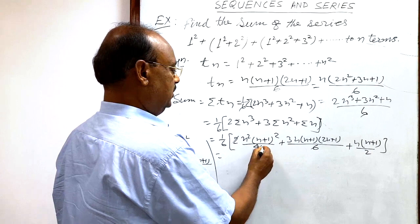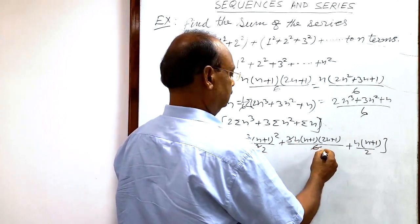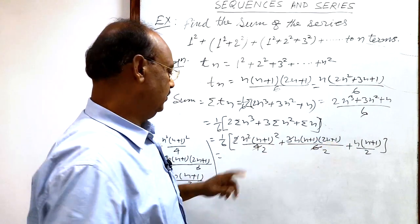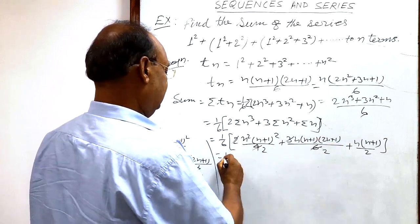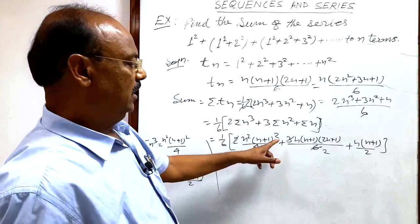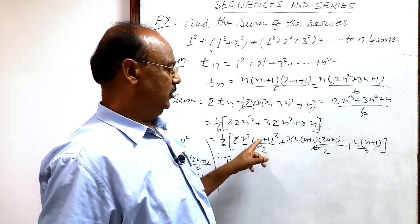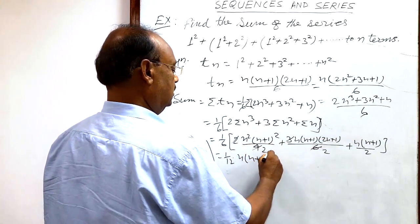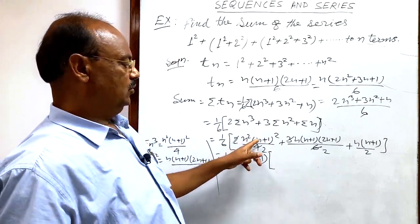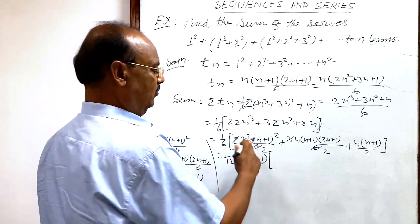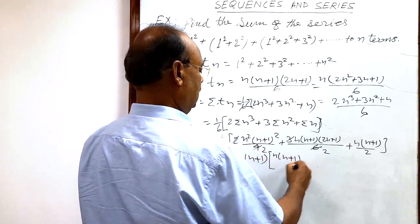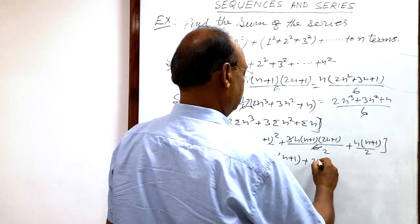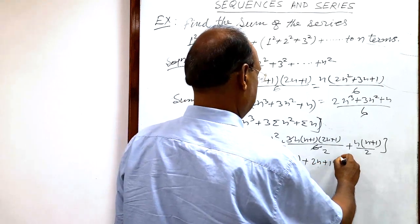Now simplifying: the 2 cancels with the 4 to give 2, and the 3 cancels with the 6 to give 2. We can take (1/2) common from each term, so overall we get 1/6 × 1/2 = 1/12. We also see that n(n+1) is common in the numerators of each term, so we take n(n+1) common, leaving n(n+1) + (2n+1) + 1.